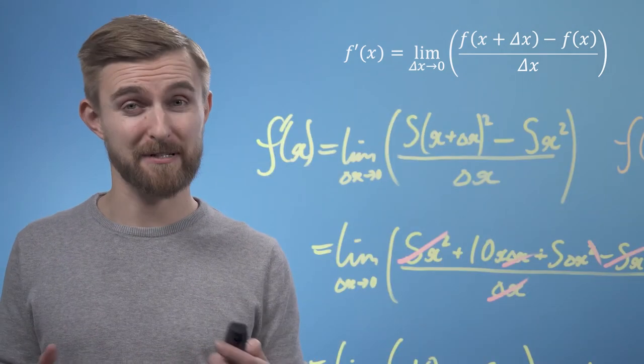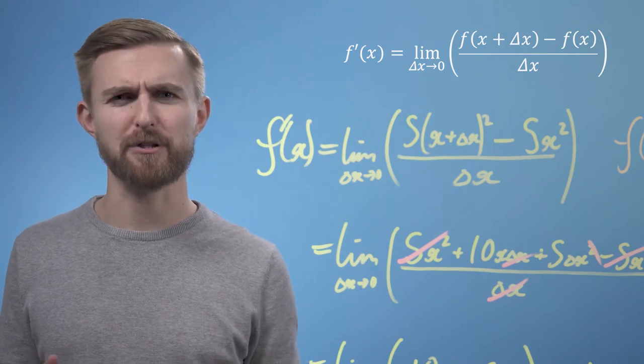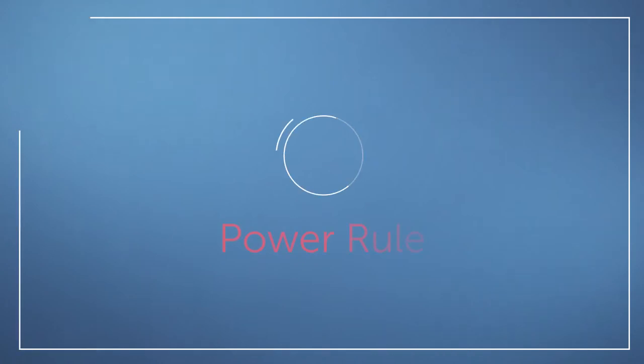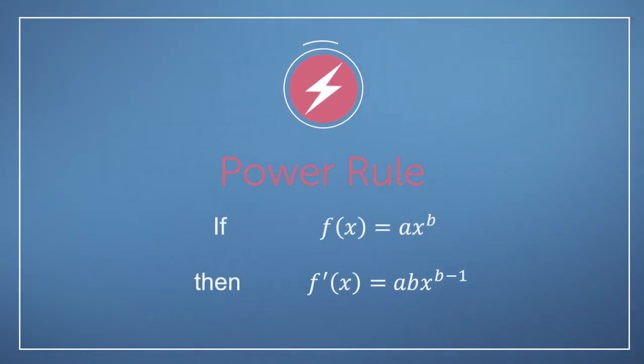We can generalize the lesson from this example to a rule for handling functions with powers of x. For example, if we take the function f of x equals a x to the power of b, and substitute it into our differentiation expression, we will find that the derivative is always f dash of x equals a b x to the power of b minus 1.